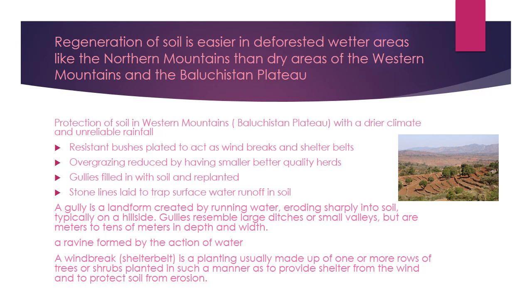The next step is reducing overgrazing by having smaller, better-quality herds. The herds should be selected very wisely — those which rely on less food or consume fewer plants. In this way we can conserve soil by preserving more plantations. Next, gullies should be filled with soil and there should be replantation in these gullies.